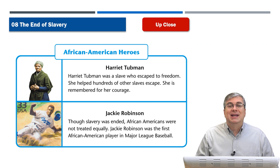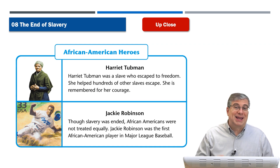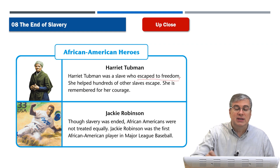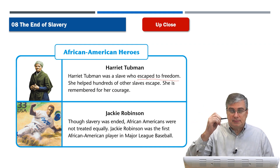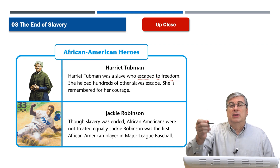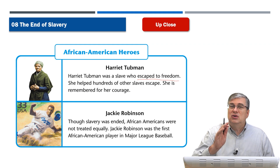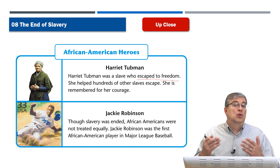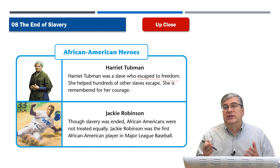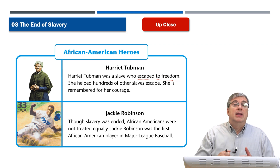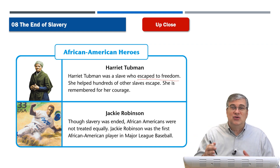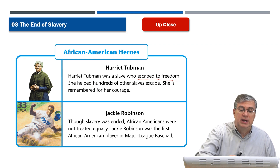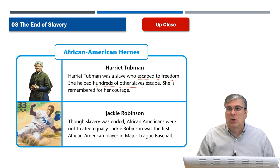There are some African American heroes we can talk about. Harriet Tubman was a slave who lived in the 1800s. She escaped to freedom — she was a slave in the south and escaped to the north, where slavery was not allowed. She didn't just rest and enjoy being a free person; she felt a responsibility and obligation to help the people she had left behind. She volunteered to help hundreds of other slaves escape, and she is remembered for her courage.